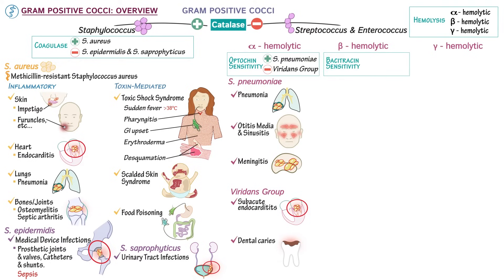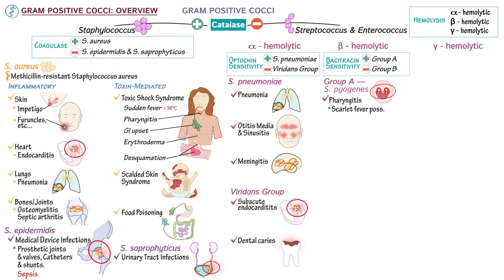Beta-hemolytic streptococci can be distinguished by their sensitivity to bacitracin. Group A streptococcus is sensitive, whereas group B streptococcus is not. Group A streptococcus, also known as Streptococcus pyogenes, causes pharyngitis with white exudate in the tonsils — strep throat. Some people also develop a rash all over their bodies called scarlet fever.